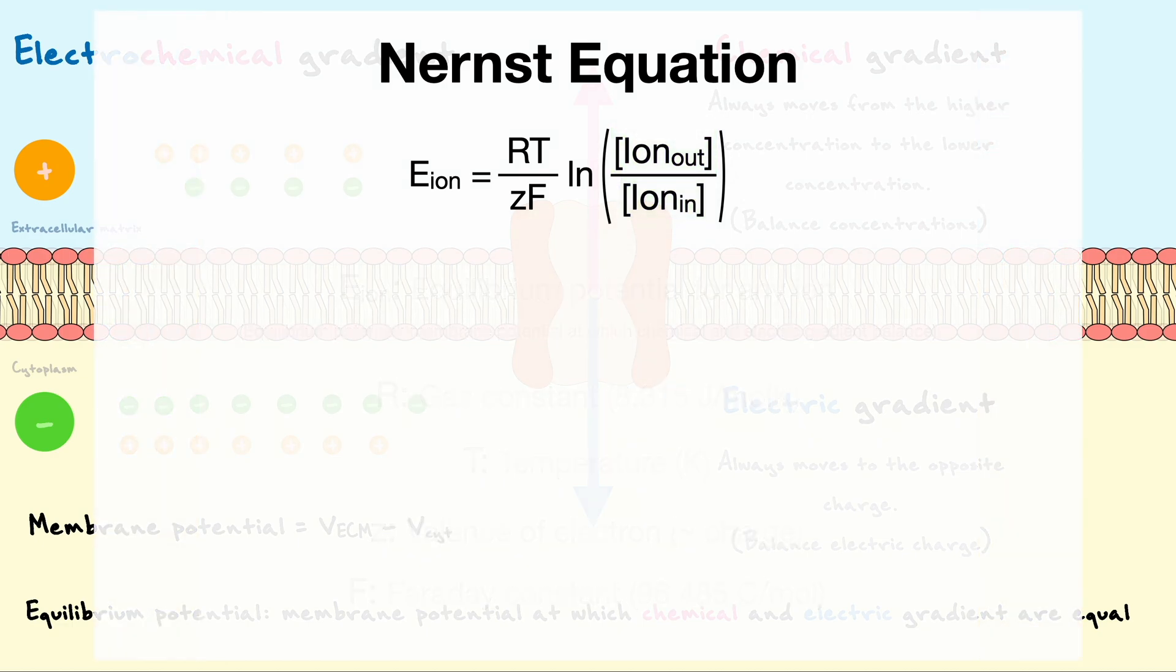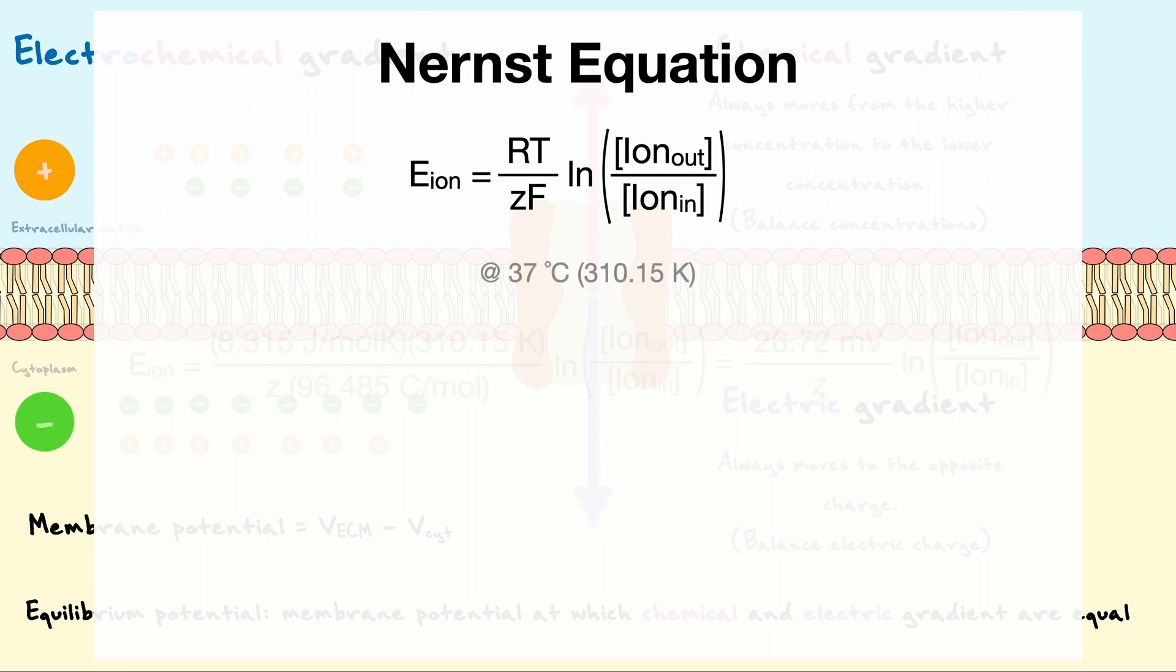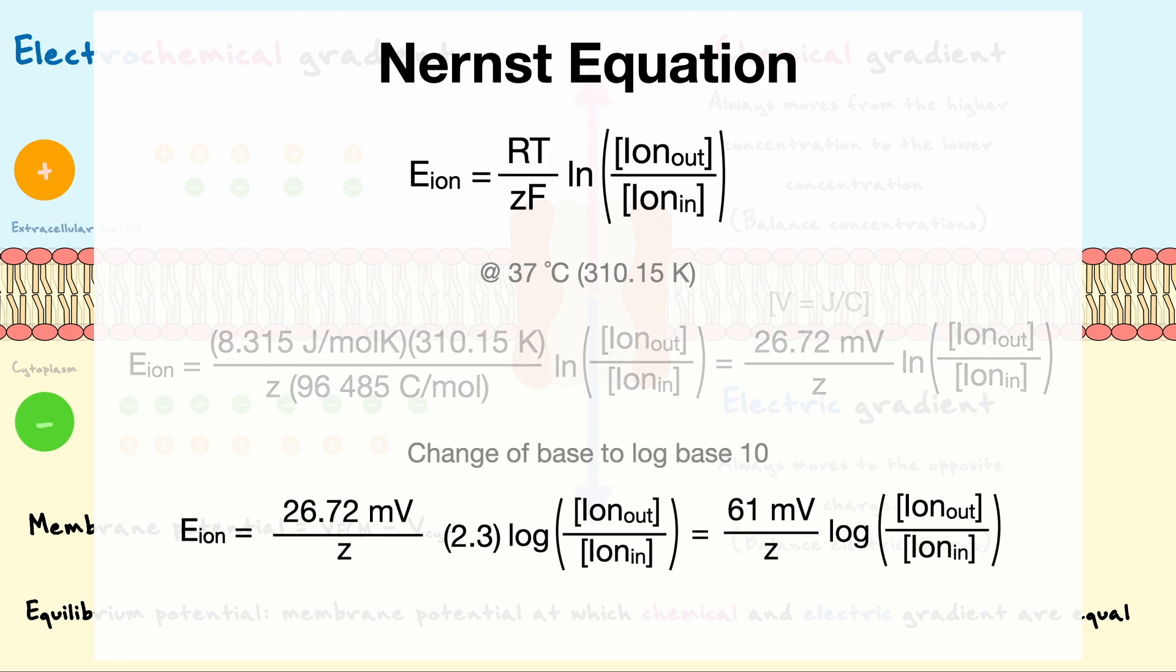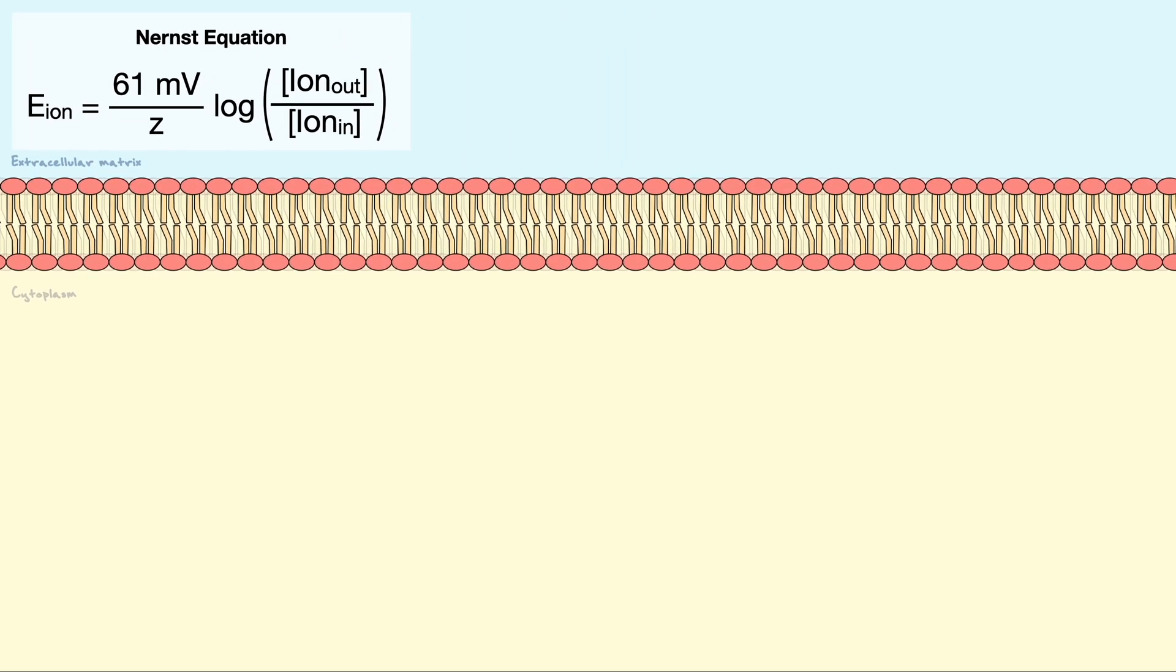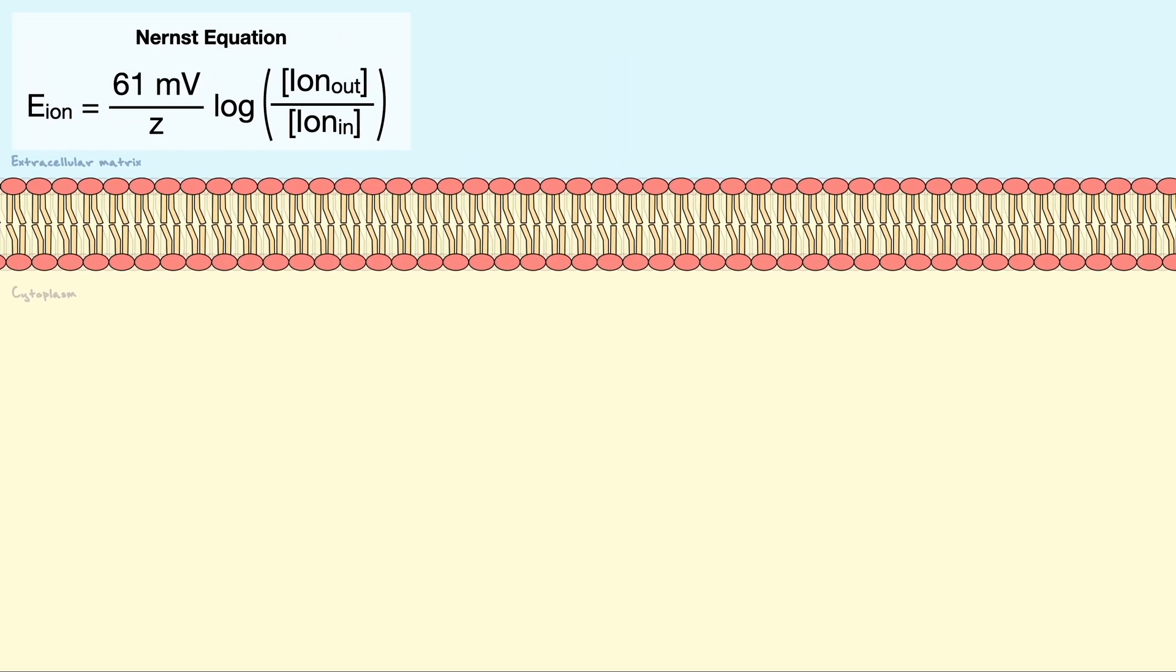When certain conditions are assumed, for example 37 degrees Celsius, the equation can be simplified to 26.72 millivolts times the natural log of the concentration over the valence. We can further simplify the equation by converting the natural log to a base 10 log by multiplying by about 2.3. The conversion will make the calculations a bit more convenient and more intuitive later on. In all, this leaves us with this equation, which we can now use to compute the equilibrium potential at 37 degrees Celsius for each ion that contributes to the membrane potential.